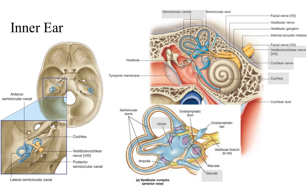The inner ear is completely encased in bone, within the petrous portion of the temporal bone. There are two parts to the inner ear: the semicircular canals, which are responsible for detecting linear acceleration in three dimensions — oriented in different directions along x, y, and z planes — and the cochlea, which is the organ of hearing.